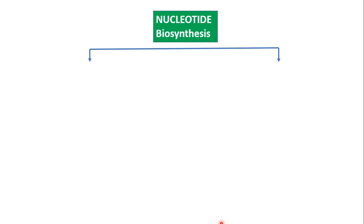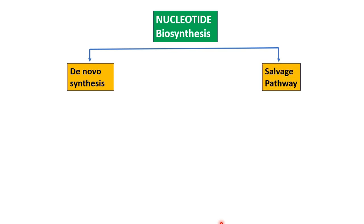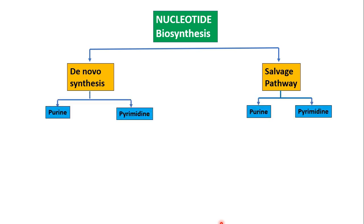The biosynthesis of nucleotides can occur in two ways. De novo pathway means new synthesis of nucleotides using simpler metabolic precursors such as amino acids, ribose phosphate, carbon dioxide, and ammonia. Since human beings can synthesize purines and pyrimidines de novo, they are said to be prototrophs. Salvage pathways recycle the free bases and nucleotides released from nucleic acid breakdown. Both pathways can synthesize purines and pyrimidines, but de novo pathway is the major pathway for purine synthesis.